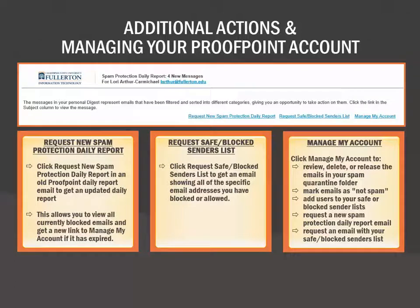Above the blocked emails in your Proofpoint Spam Protection Daily Report email, you have three links which allow you to maintain your Proofpoint account. First, you can request a new Spam Protection Daily Report email. This allows you to receive an update of the emails that have been blocked, and also updates the Manage Account link if it is expired. Second, you can request that the list of safe senders and blocked senders be sent to you via email. Lastly, you can click Manage My Account to review all of the blocked emails in your Spam Quarantine folder, not just the new ones in your current Spam Protection Daily Report email.